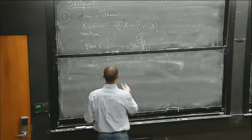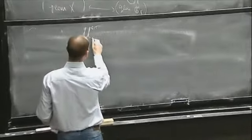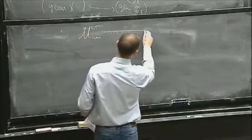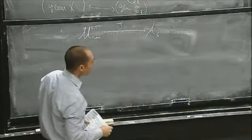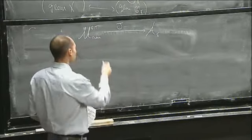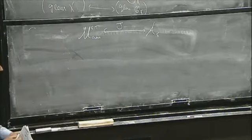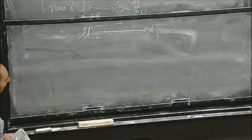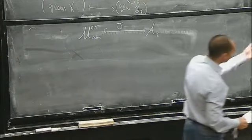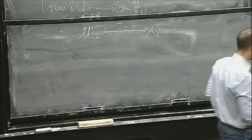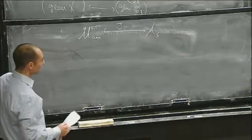If I look at the moduli space of cubics — the GIT moduli space of cubics — there's a map to A5, the intermediate Jacobian map, and this is saying that this map is injective. It's also telling us that the cubic threefold is not rational.